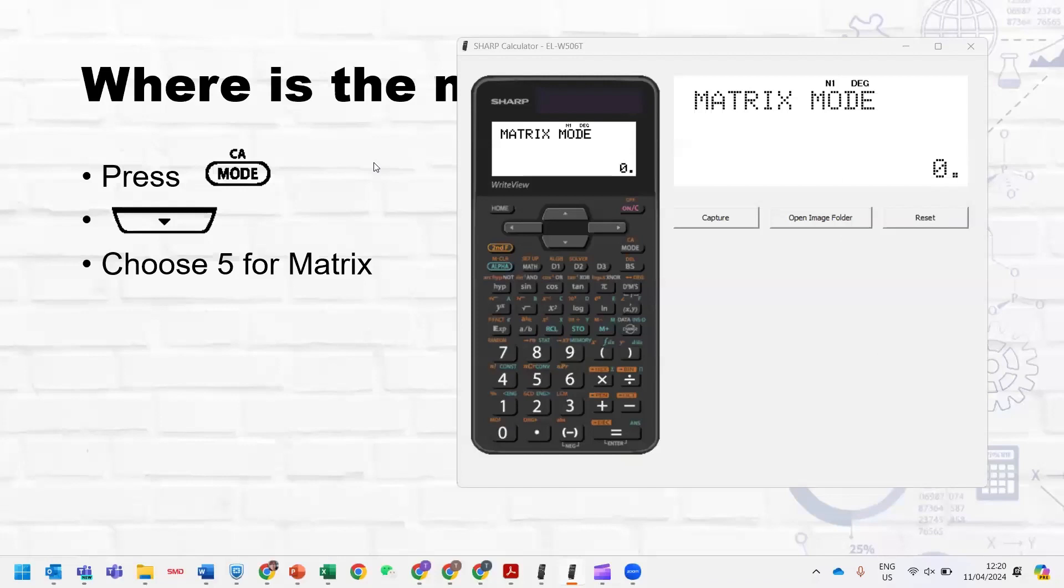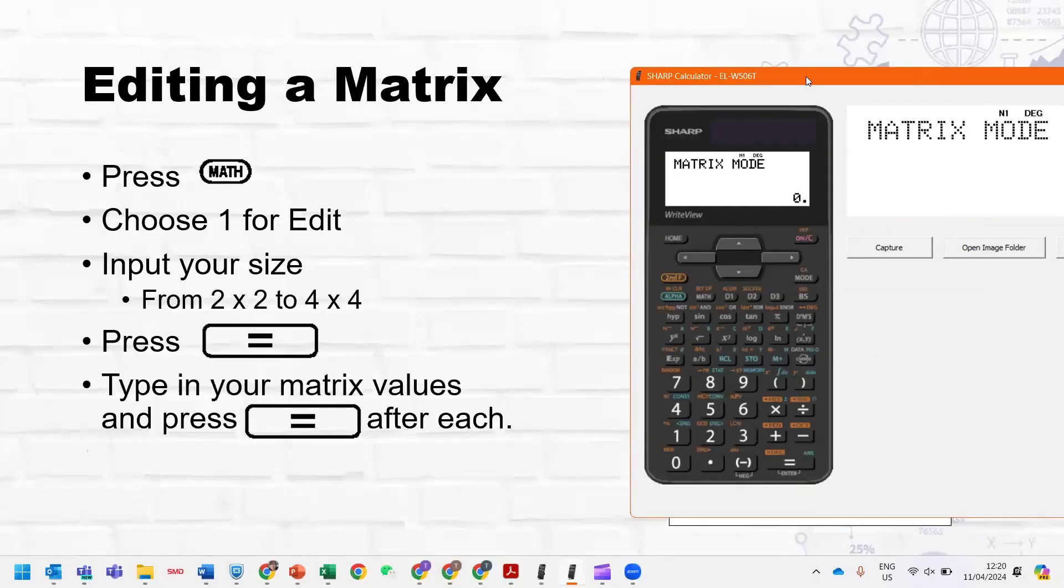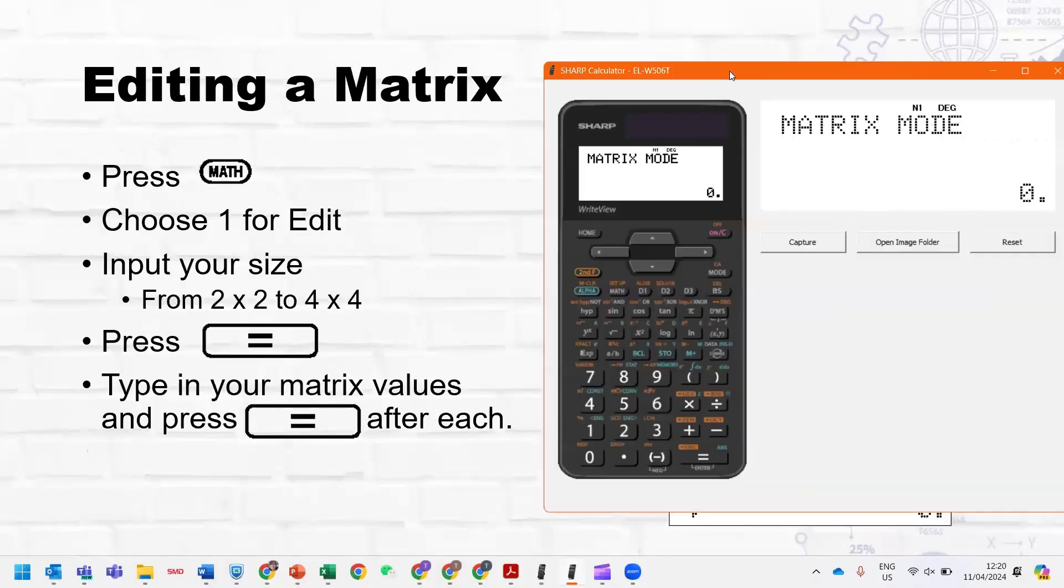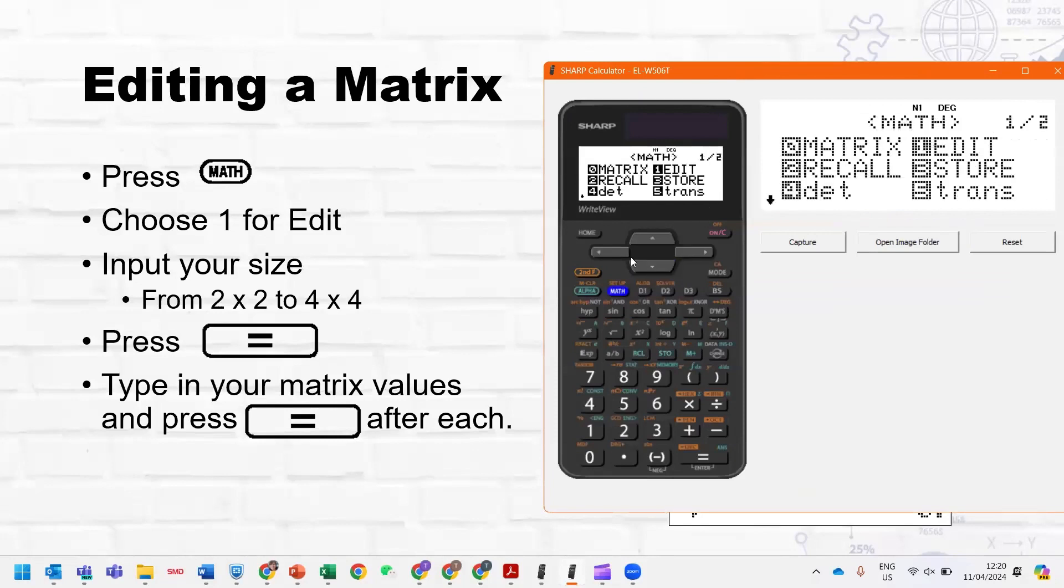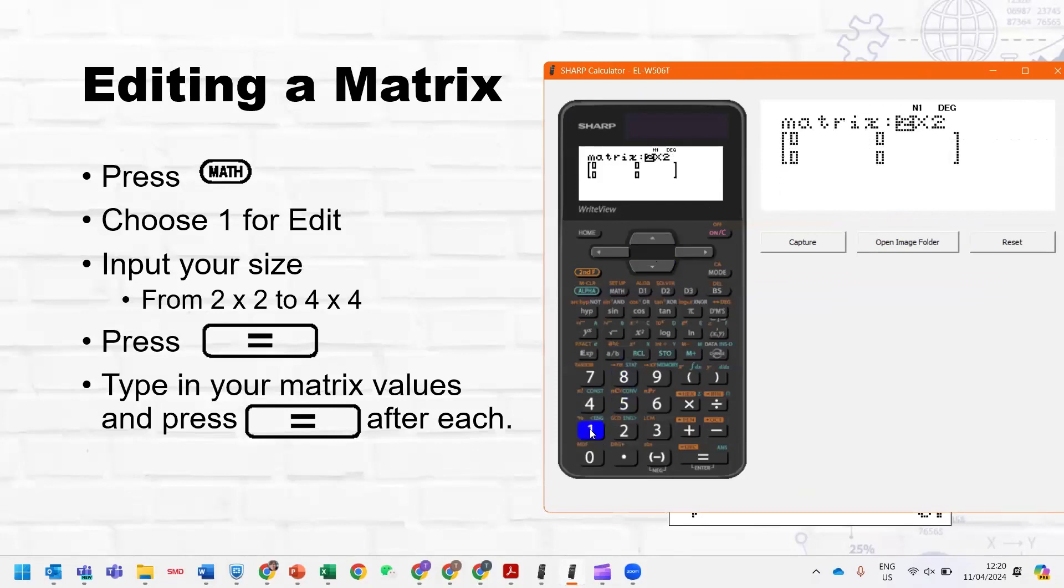So now, the next thing is how do we edit the matrix? And to do that, we're simply going to press Math, and we're going to choose one edit. Now you can make the size of your matrix anything from a two-by-two matrix up to a four-by-four matrix, so two-by-three, or a three-by-two, it's also acceptable.